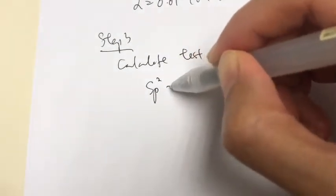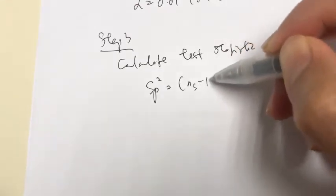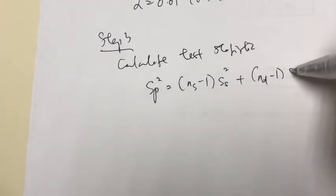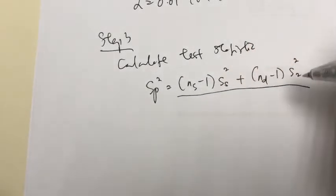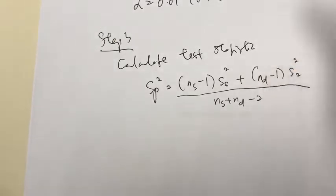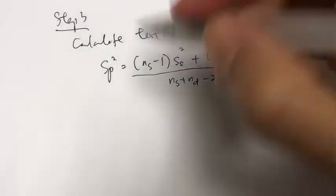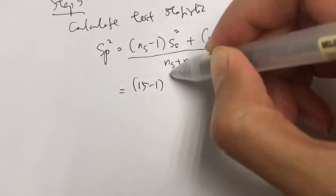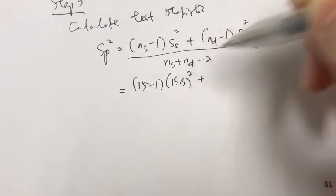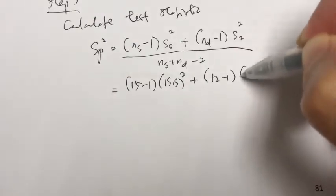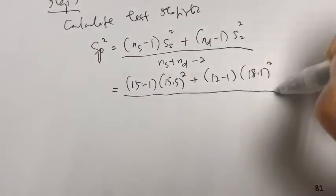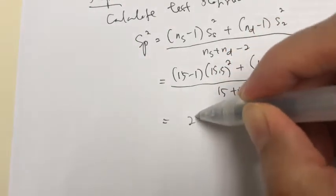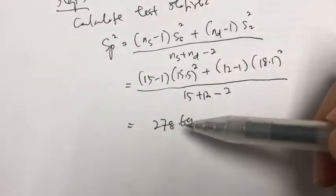The estimate of the pooled variance: degrees of freedom for the first sample times its sample variance, plus degrees of freedom for the second sample times its sample variance, over the combined degrees of freedom (n_S + n_D − 2). Plugging in the numbers: (15 − 1)(15.5²) + (12 − 1)(18.1²) all over (15 + 12 − 2). We get the estimate of the pooled variance equal to 278.69.